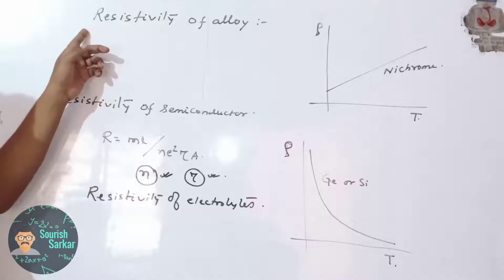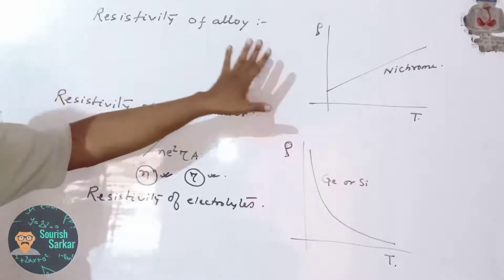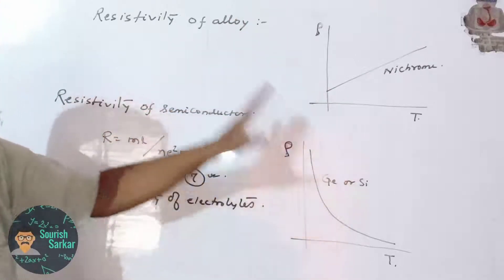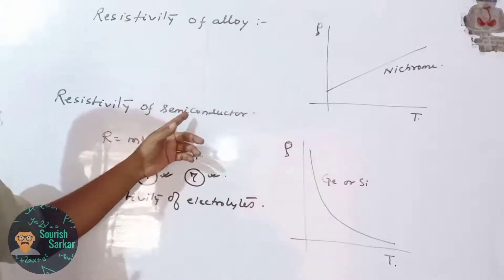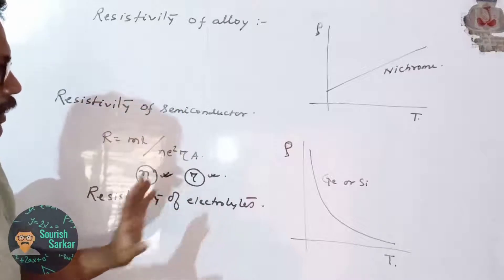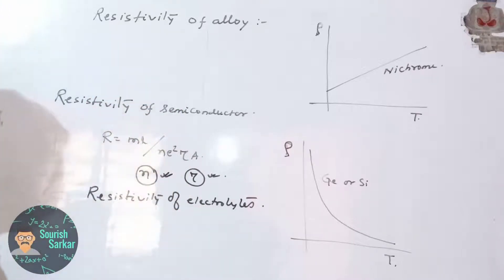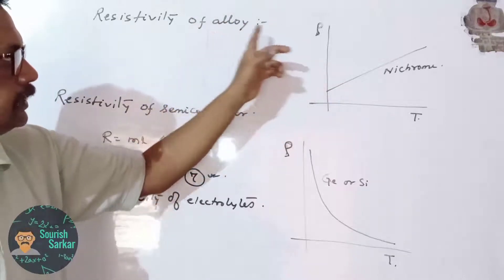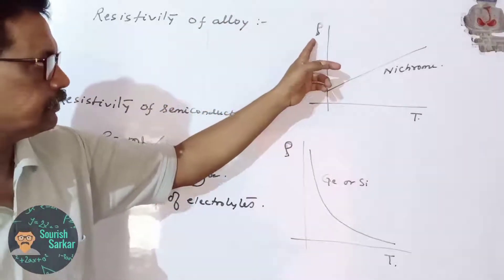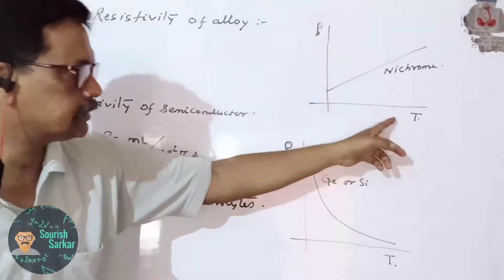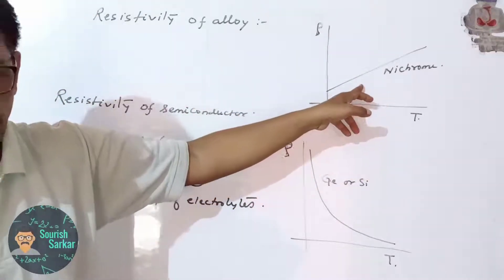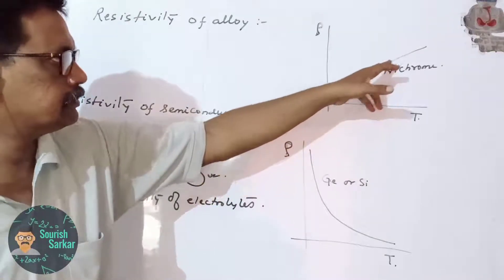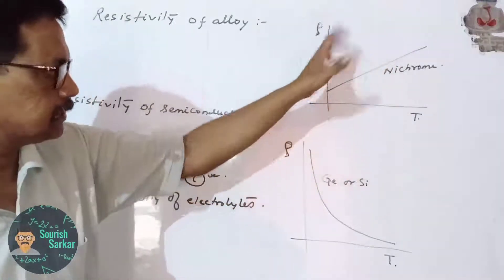So we understand the variation of resistivity of three different types of material — alloy, semiconductor, and electrolyte — with temperature. For alloy, the graph of resistivity versus temperature shows that with the increase in temperature the resistivity of the alloy increases slowly.